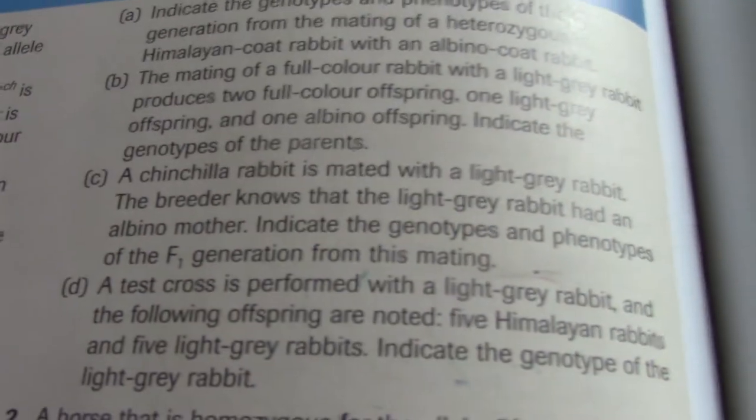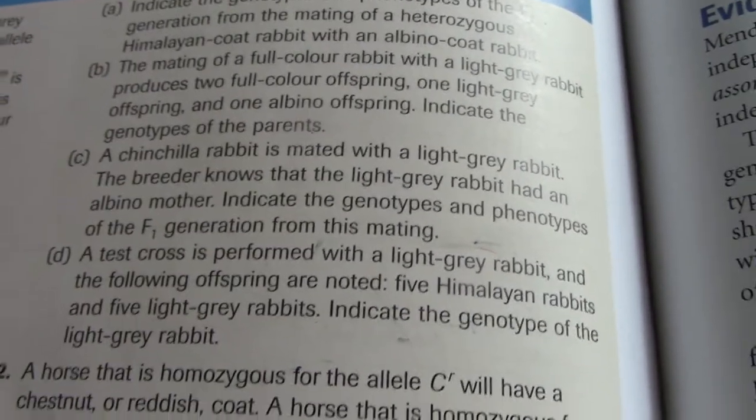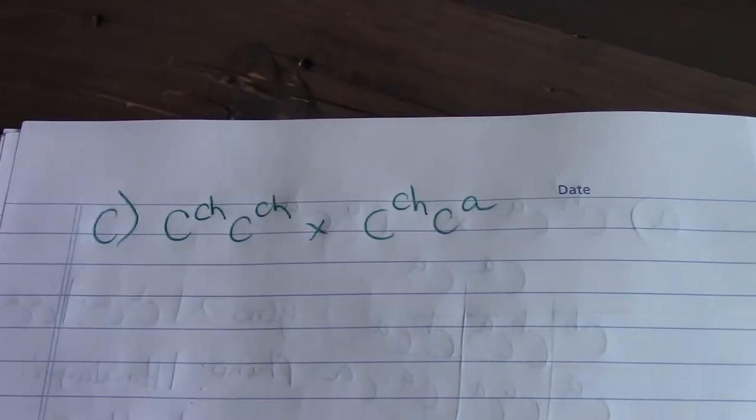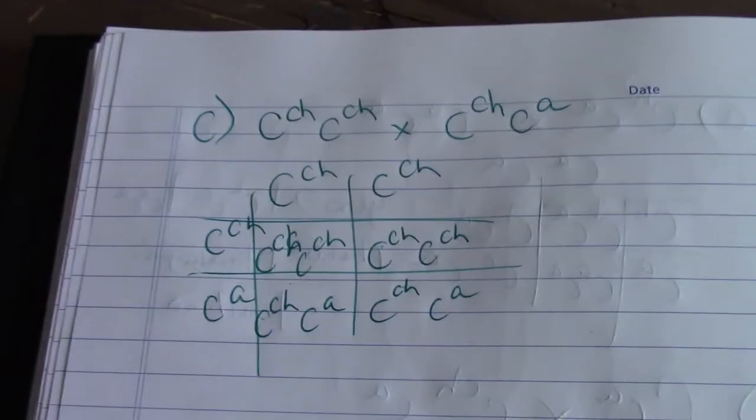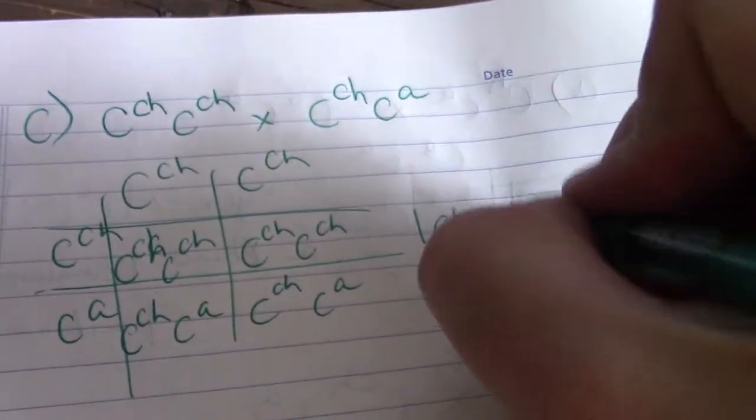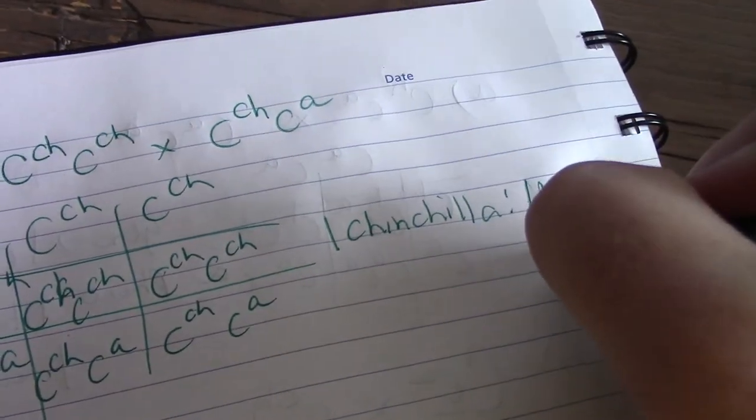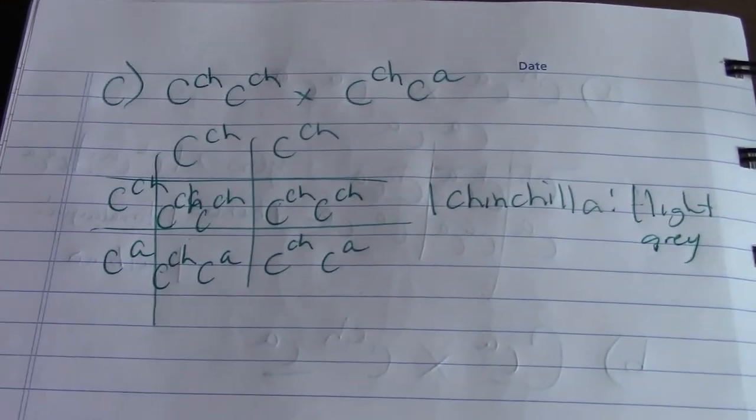C asks, a chinchilla rabbit is mated with a light gray rabbit. The breeder knows that the light gray rabbit had an albino mother. So you have chinchilla, and the light gray rabbit had an albino mother. So the light gray rabbit has to be this. Okay? And it says, indicate the genotypes and phenotypes of the F1 from this mating. All right, so this is what we get, right? So we're going to get one chinchilla to one light gray. Or 50% chinchilla to 50% light gray.